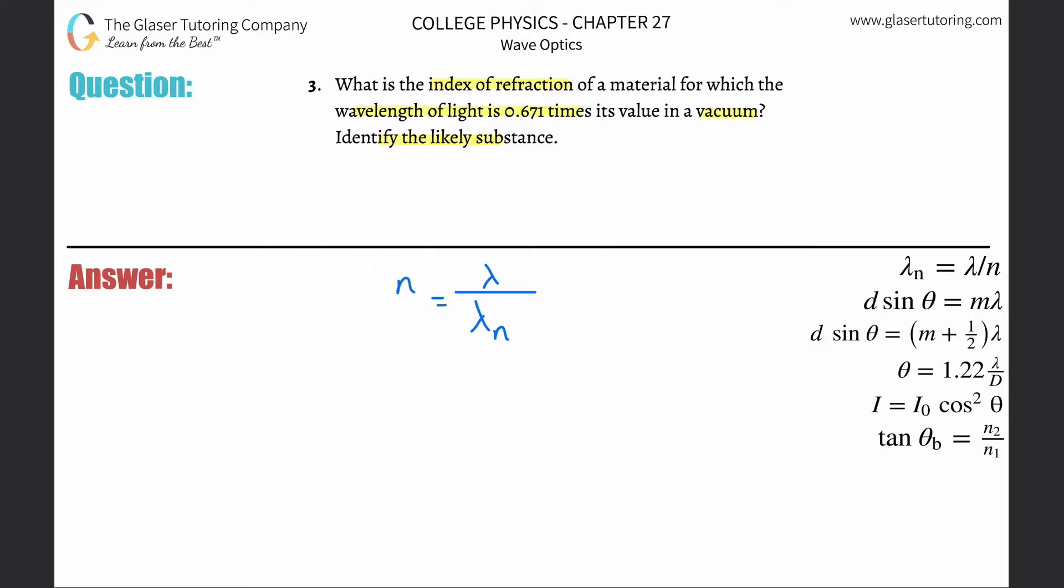So in order to know this, I need to know the wavelength of the light in a vacuum, and I need to know the wavelength of the light in the particular medium, which we don't know what it is. That's what we're trying to find.